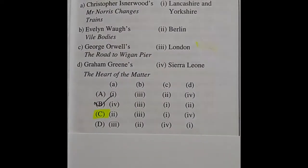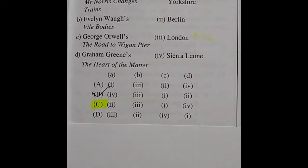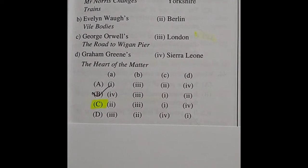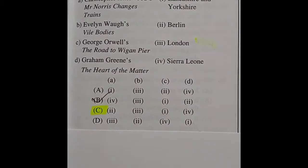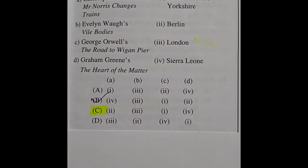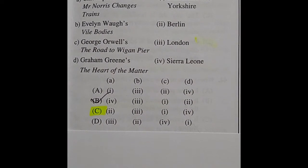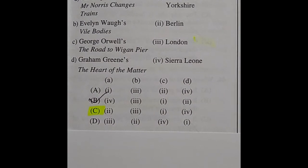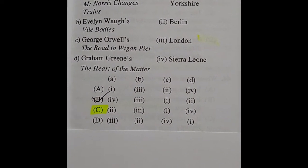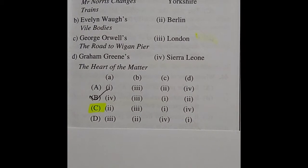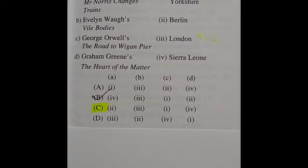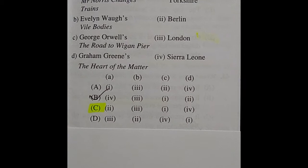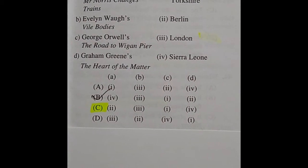Question 32: Match List 1 with List 2. List 1 has Christopher Isherwood's Mr. Norris Changes Trains, Evelyn Waugh's Vile Bodies, George Orwell's The Road to Wigan Pier, and Graham Greene. List 2 has Lancashire and Yorkshire, Berlin, and London. The right answer is option C: Isherwood — Berlin; Evelyn Waugh — London; George Orwell — Lancashire and Yorkshire; Graham Greene — Sierra Leone.